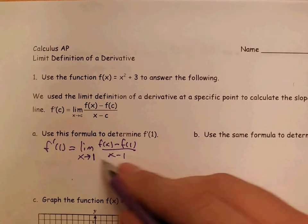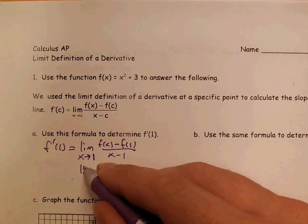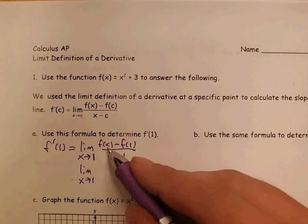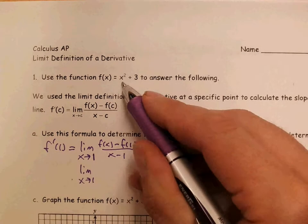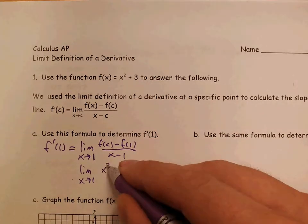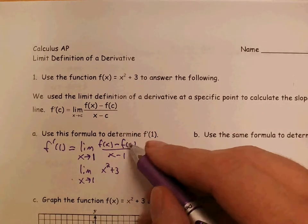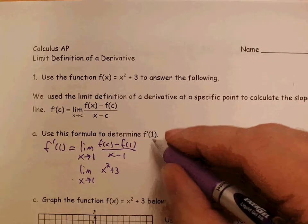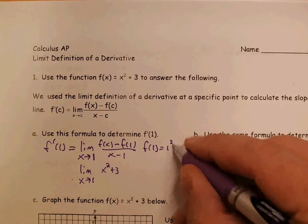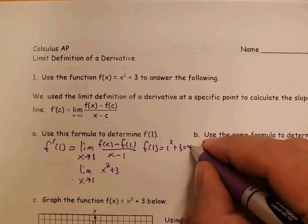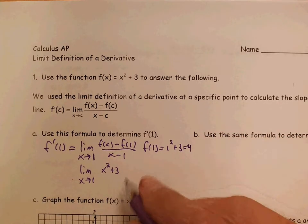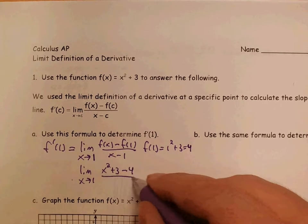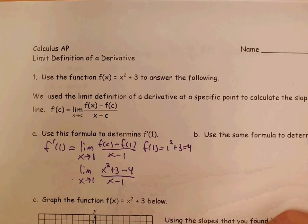Now we need to do this limit, and so we need to plug in what we know about this. This is the limit as x approaches 1 of f of x is x squared plus 3. I'm going to write that, x squared plus 3. f of 1 is what I get when I plug in 1 into f of x. So, f of 1 is 1 squared plus 3, which is 4. So, we're going to get f of x minus f of 1, which is f of x minus 4, all over x minus 1.